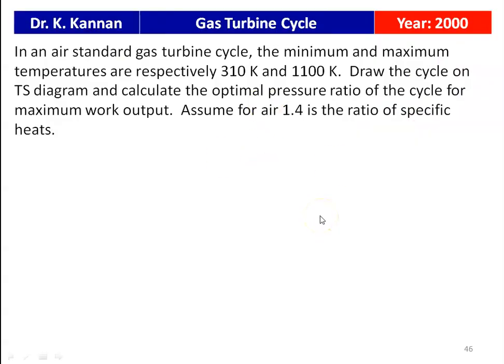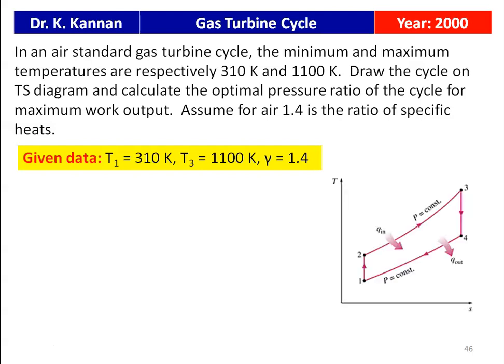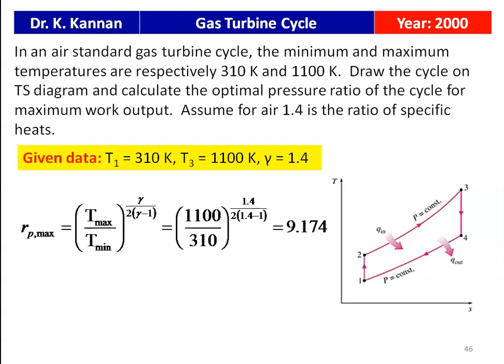The next two questions are from the 2000 question paper. In an air standard gas turbine cycle, minimum and maximum temperatures are 310 K and 1100 K respectively. Draw the cycle on a T-s diagram and calculate the optimal pressure ratio for maximum work output, assuming γ = 1.4. The optimum pressure ratio = (T_max / T_min)^(γ / (2(γ-1))) = (1100/310)^(1.4/0.8) = 9.174.